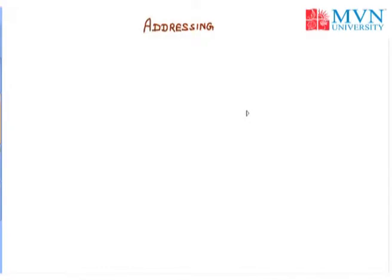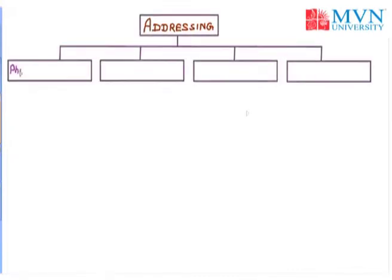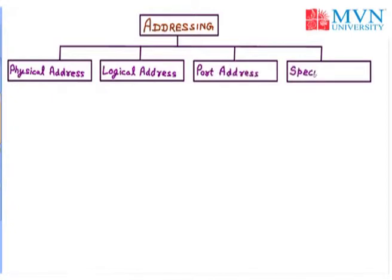For example, if I want to develop a LAN, MAN, or WAN, in every case we need some specific addresses and we need the physical addresses. So we divide the addressing scheme or the set of addresses into four parts. The first one is physical address, also called link address. The second one is logical address, also called IP address. Next we have the port address, and lastly we have the specific address.